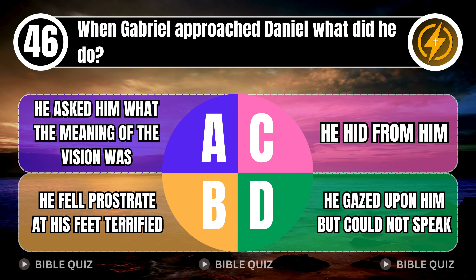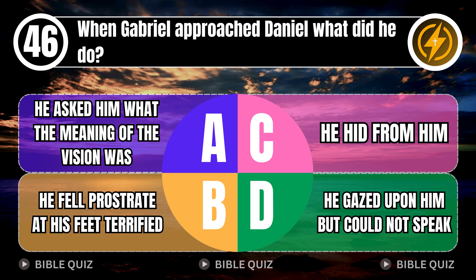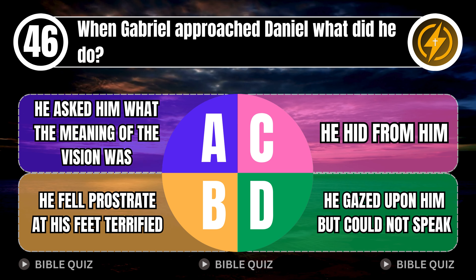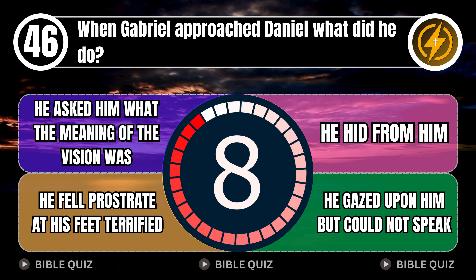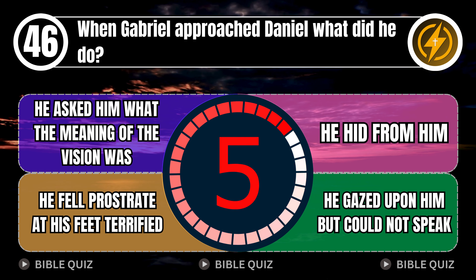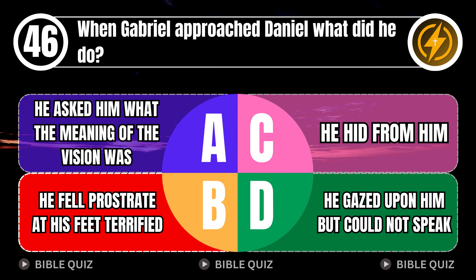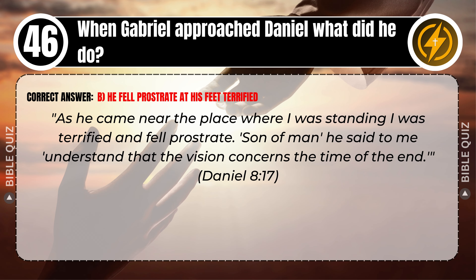Question 46: When Gabriel approached Daniel, what did Daniel do? A. He asked him what the meaning of the vision was. B. He fell prostrate at his feet terrified. C. He hid from him. D. He gazed upon him but could not speak. Correct answer: B. He fell prostrate at his feet terrified. As he came near the place where I was standing, I was terrified and fell prostrate. 'Son of Man,' he said to me, 'understand that the vision concerns the time of the end.' Daniel 8 verse 17.